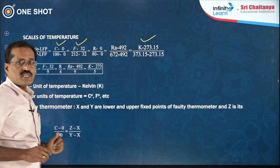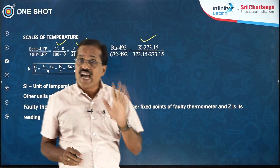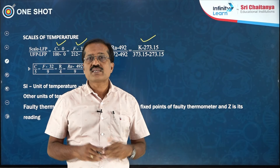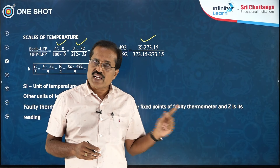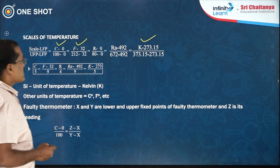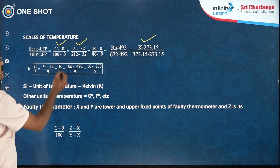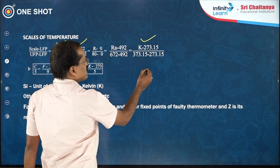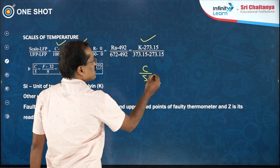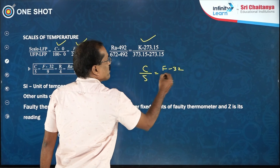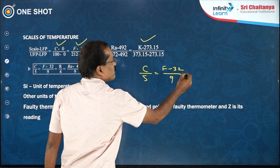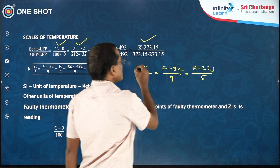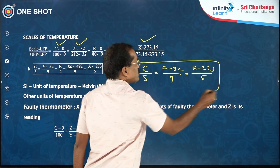Sometimes, other than the standard scales, there will be a faulty or unknown scale. We have prepared for that too. By simplification, you get this relation: C/5 = (F − 32)/9 = (K − 273)/5. This is the most important relation that you should focus on.